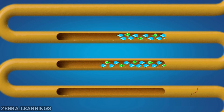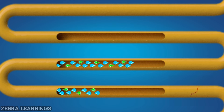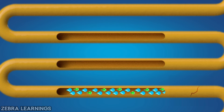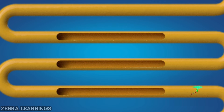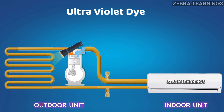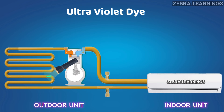Wherever there is a leak, the refrigerant leaks along with the UV dye. Then, when checking with a UV lamp, only the spot where the UV dye has leaked will be visible in a bright color. With this, we can easily know where the leak is.